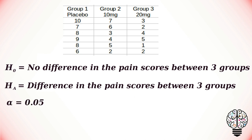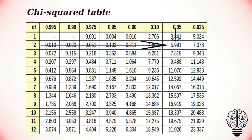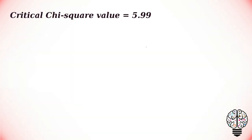We assume our alpha value to be 0.05 and our degrees of freedom is calculated by taking the number of treatment groups minus 1, that is 3 minus 1 equal to 2. To calculate the chi-squared r statistic at 0.05 significance level and with degrees of freedom equal to 2, we get a critical value of 5.99.